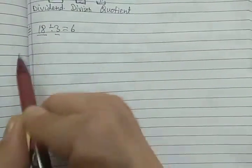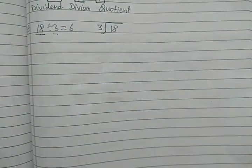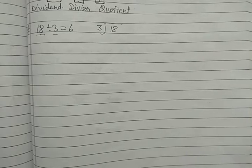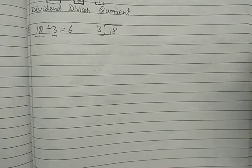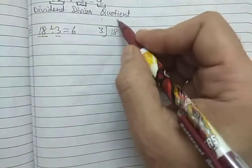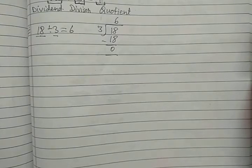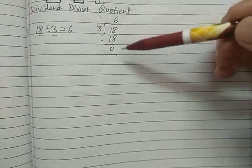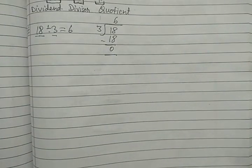If we want to do the same question by the long division method, we have the dividend 18 divided by divisor 3. The method is the same — we still recite the 3 times table. But the only difference is we do it using the long division method. The result will also be the same because whichever method we use, our answer is always the same. So 3 sixes are 18, and then we subtract. In this way we can divide using the long division method. We write the quotient here, and what is left after subtracting at the end is called the remainder.